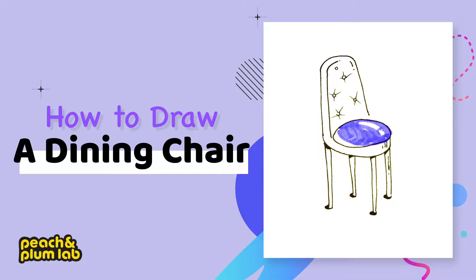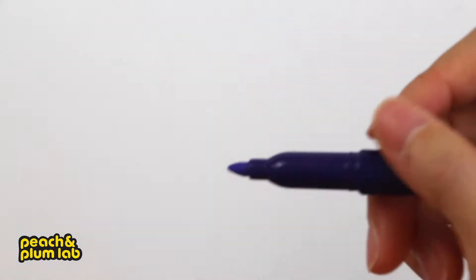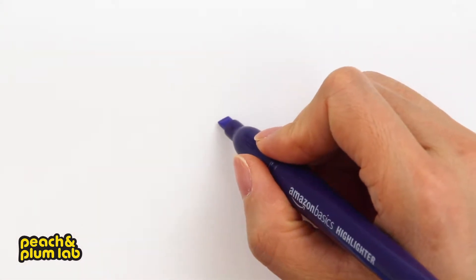I'm going to choose the purple highlighter to draw the chair. Let's start from the middle for the seat part. Let's start with an oval shape.